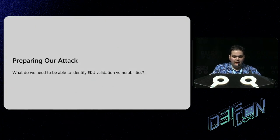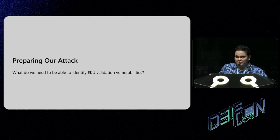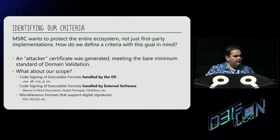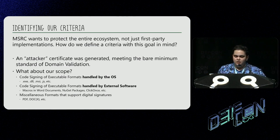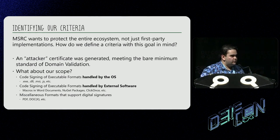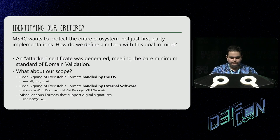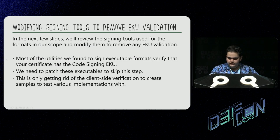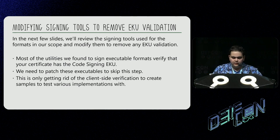So how do we identify vulnerable implementations that fail to validate a certificate's intended purpose? We started by identifying some basic criteria. The Microsoft Security Response Center is interested in protecting the entire ecosystem, not just first-party implementations. We ended up looking at a variety of file formats that leverage digital signatures — most frequently, this included code signing because of the bare minimum organization validation requirement. For testing, we also generated an SSL certificate, which only required proof of domain control. In the next few slides, we'll review the signing tools relevant to the file formats we're interested in and modify them to remove any client-side checks. What matters is the receiving end and how it handles EKUs.